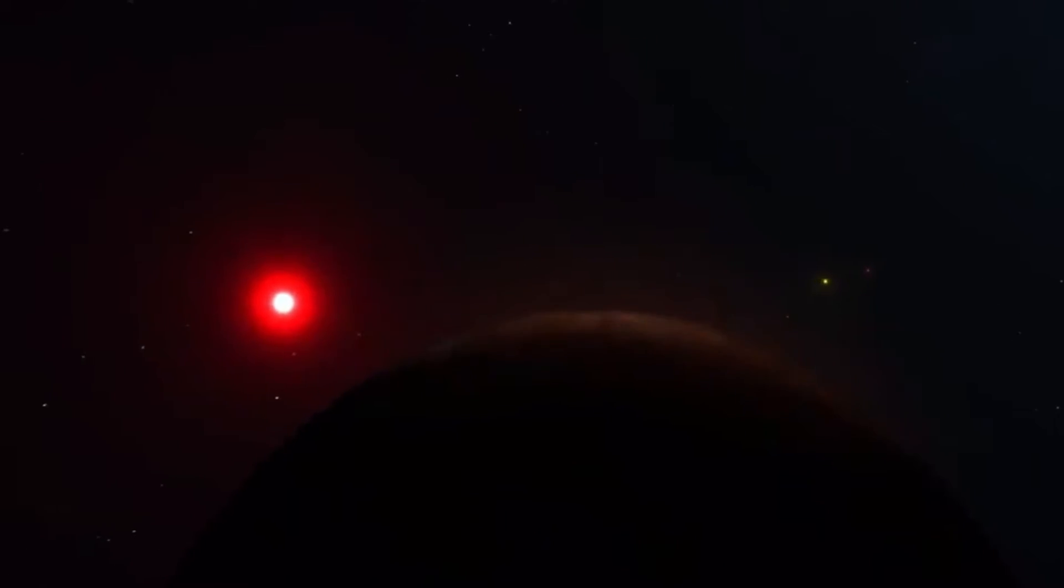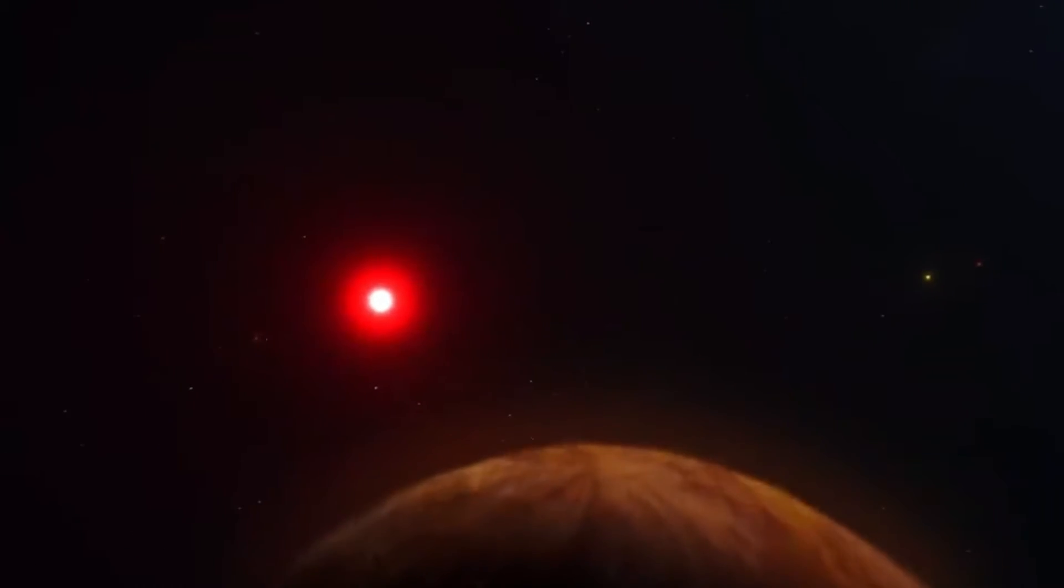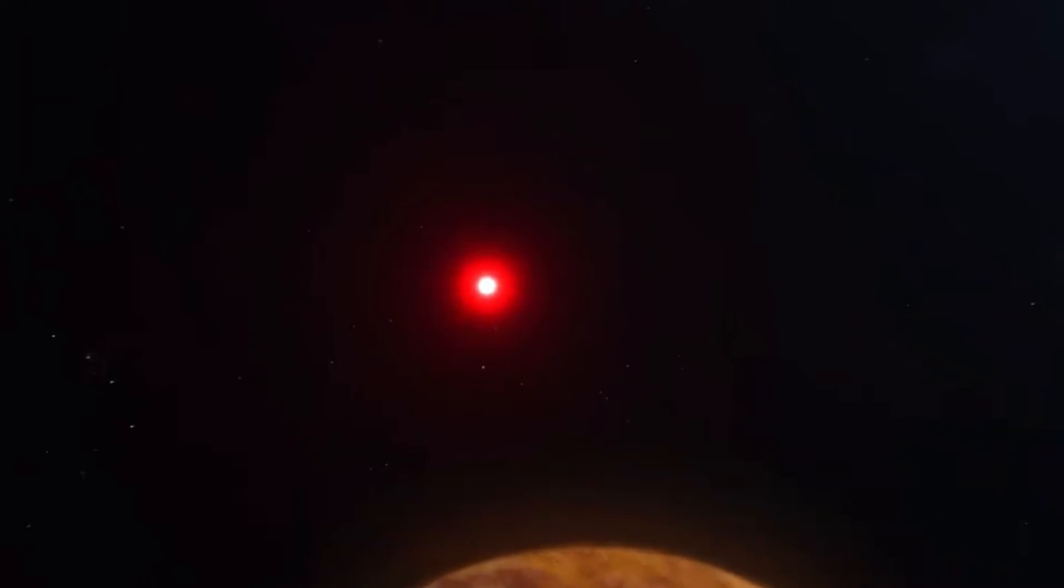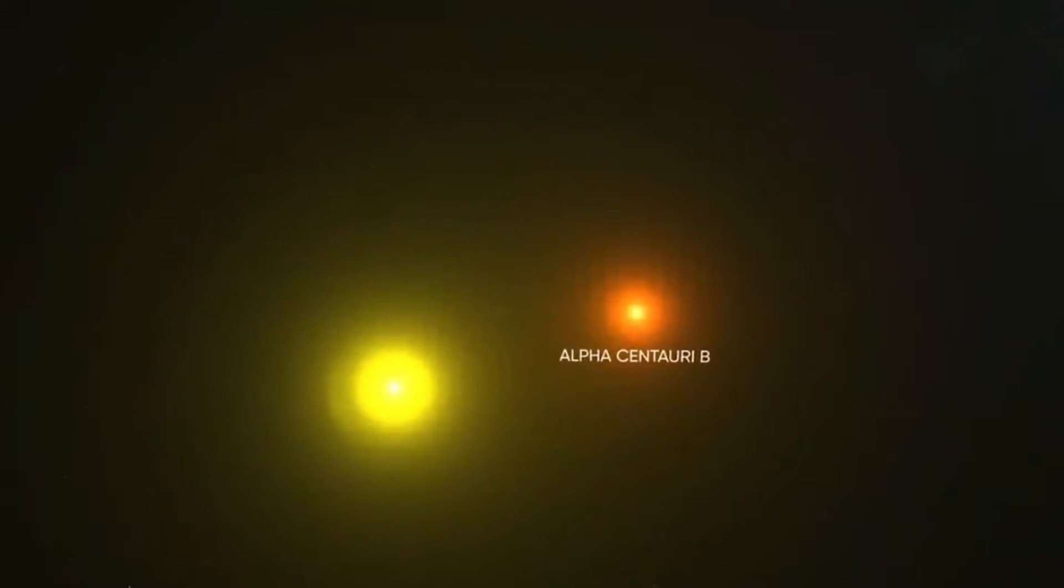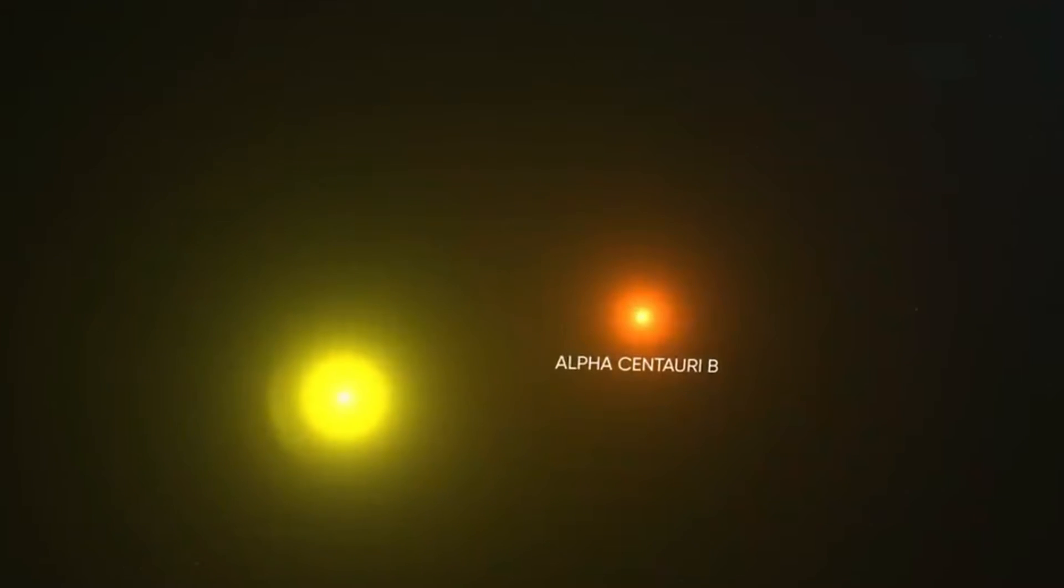The discovery of Proxima Centauri b, a planet close enough to the closest star to the solar system to be habitable, was a big deal in astronomy. It has brought attention to the Alpha Centauri star system, which Proxima is a part of.